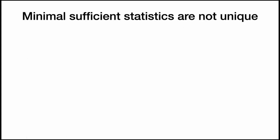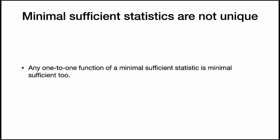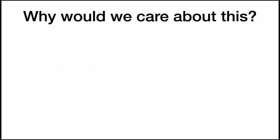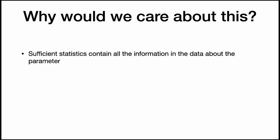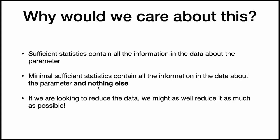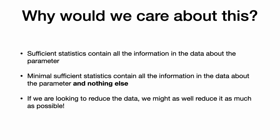One note is that minimal sufficient statistics are not unique — any one-to-one function of a minimal sufficient statistic is also minimal sufficient. So if x-bar is minimal sufficient, then 2x-bar and e to the power x-bar are also minimal sufficient. Sufficient statistics contain all the information in the data about the parameter, and minimal sufficient statistics contain all the information in the data about the parameter and nothing else. This will also be related to an idea in the next video called completeness, which is somewhat similar to minimal sufficiency. If we are looking to reduce the data, we might as well reduce it as much as possible. Thanks for watching — please like and subscribe to learn more statistics.